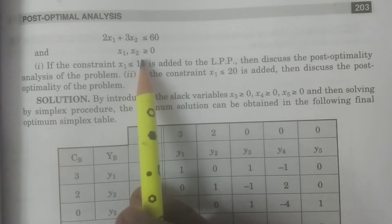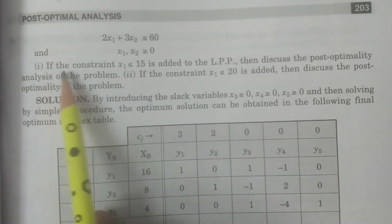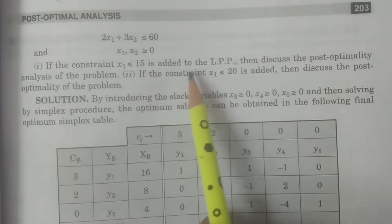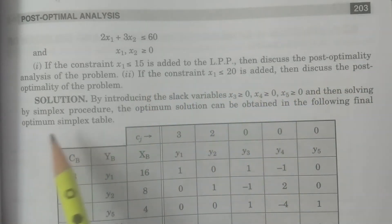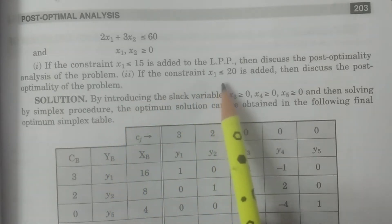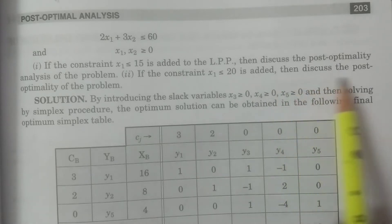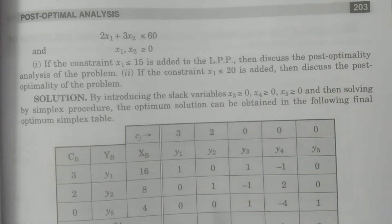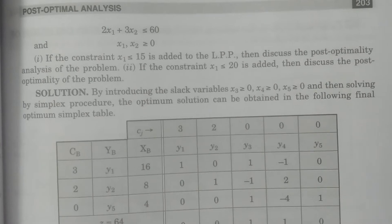Now in the question: Question 1 — if the constraint x1 ≤ 15 is added to the LPP, then discuss the post-optimality analysis. Question 2 — if the constraint x1 ≤ 20 is added, then discuss the post-optimality analysis. So two straightforward questions have been asked here.